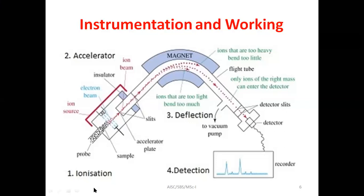There are four key parts of the mass spectrometer: ionization, accelerator, deflection, and detector. There is also the probe, ion source or electron beam, insulator, ion beam, magnet, and a flight tube through which the molecule passes through a long chamber. The ions then reach the detector slits and detector, which records the M/Z versus abundance of each M/Z value. That is the instrumentation diagram for the mass spectrometer.